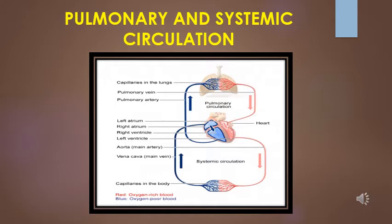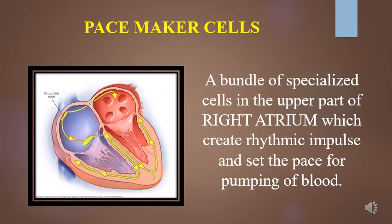Children, look at the diagram given here. And to set the pace for pumping of blood, there is a bundle of specialized cells in the upper part of the right atrium. These cells create rhythmic impulses and set the pace for pumping of blood. These cells are referred to as pacemaker cells. They directly control the heart rate. They make up the cardiac pacemaker or the natural pacemaker of the heart. In human beings, the concentration of pacemaker cells in sinoatrial SA node is the natural pacemaker.